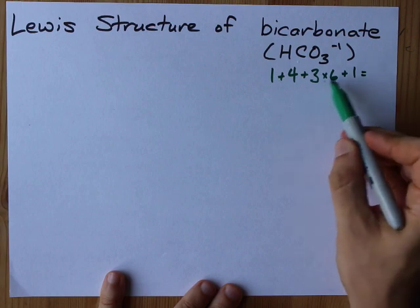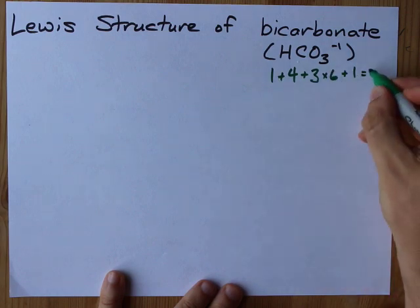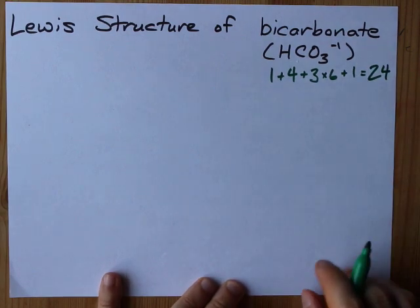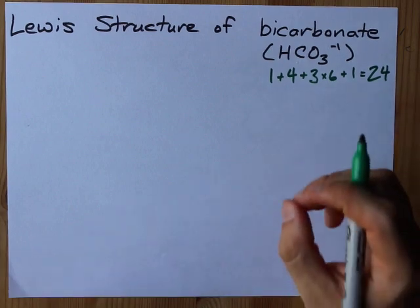When we add these together, I get 18, 19, 20, 24. That's a good nice round number. I like that. That's 24 valence electrons.